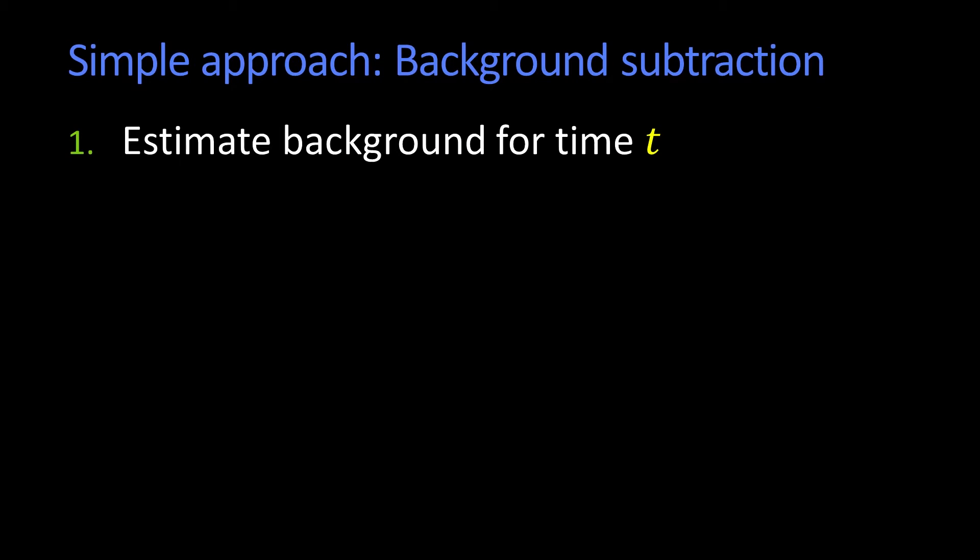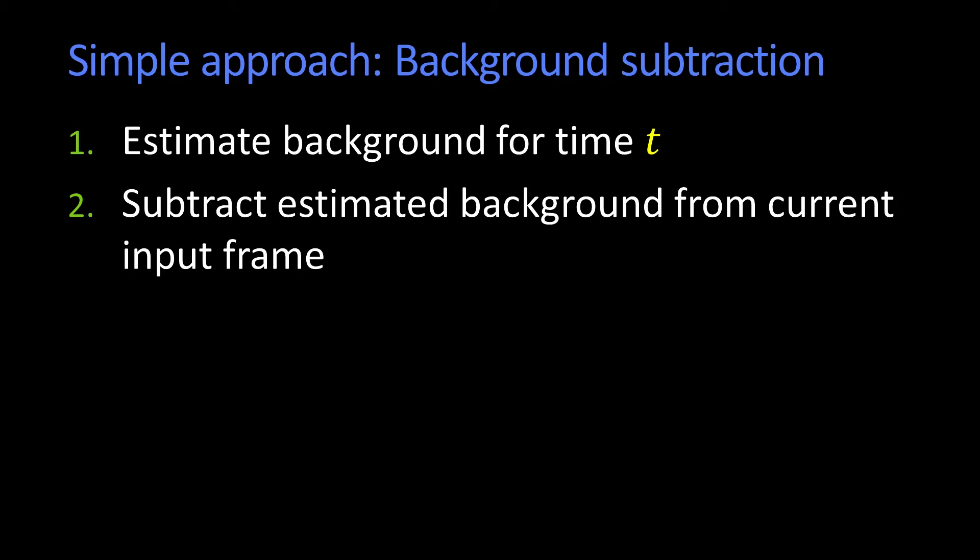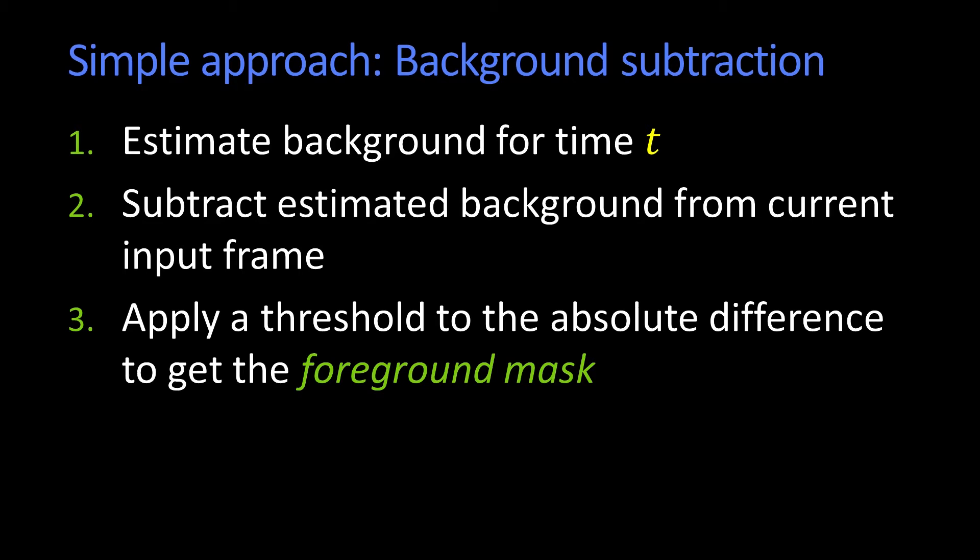How do you do background subtraction? Not so complicated. You have to estimate the background at some time t - image of x, y, and t. Then I'm going to subtract that background from whatever the current frame is. And wherever the difference is big enough, I'm going to call that my foreground mask. It's an absolute difference because the background could be brighter than the thing that's moving or could be darker.